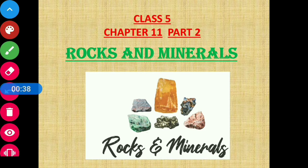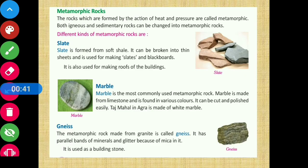In our last class, we read about rocks and different types — igneous and sedimentary rocks — in Part 1. Today in Part 2, we are going to start our discussion from metamorphic rocks. We know the three types of rocks are igneous, sedimentary, and metamorphic. We have completed igneous and sedimentary, so now we are moving on to metamorphic rocks.